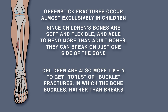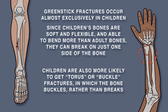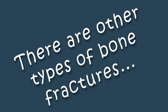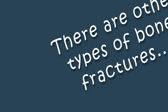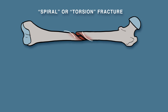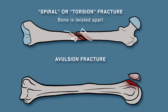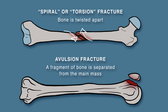Children are also more likely to get torus, or buckling fractures, in which the bone buckles rather than breaks. Other types of bone fractures include spiral or torsion fractures, which occur when a bone is twisted apart, and avulsion fractures, which occur when a fragment of bone is separated from the main mass.